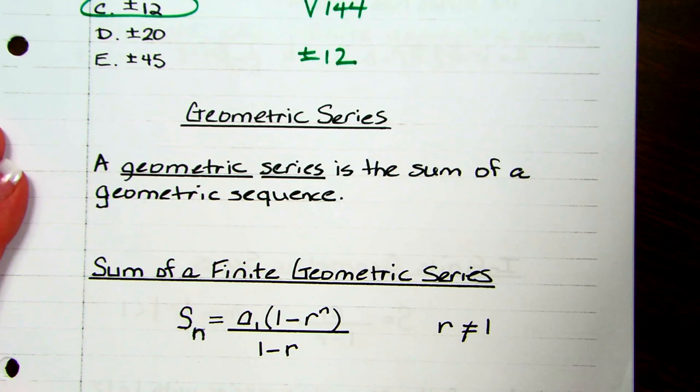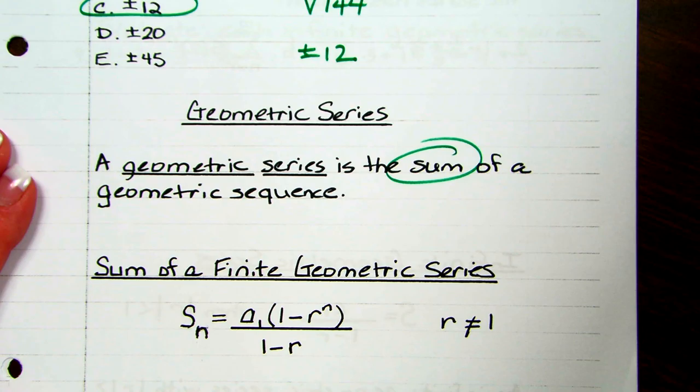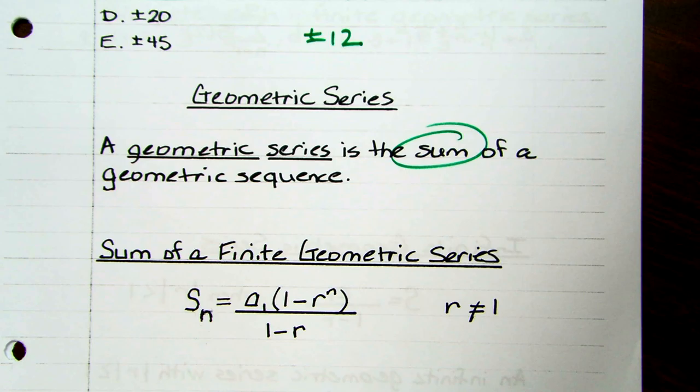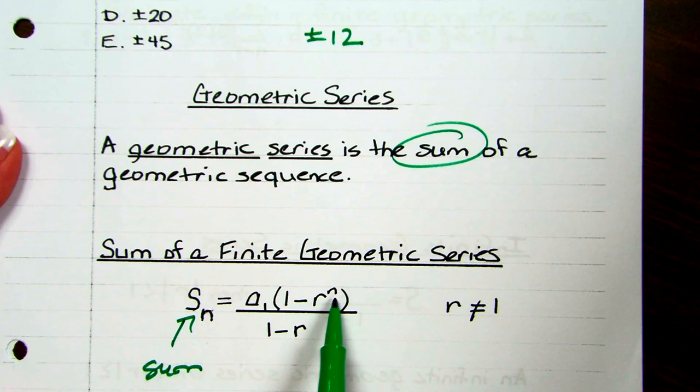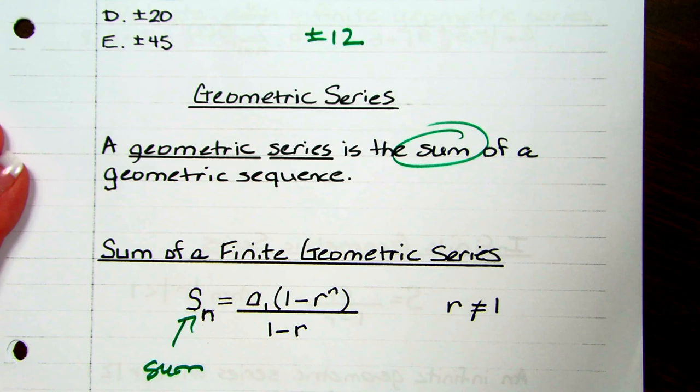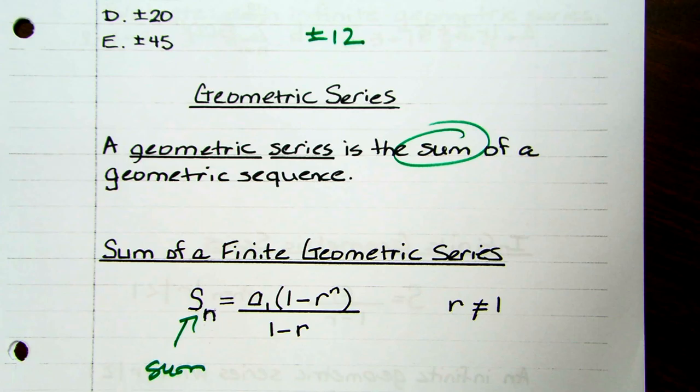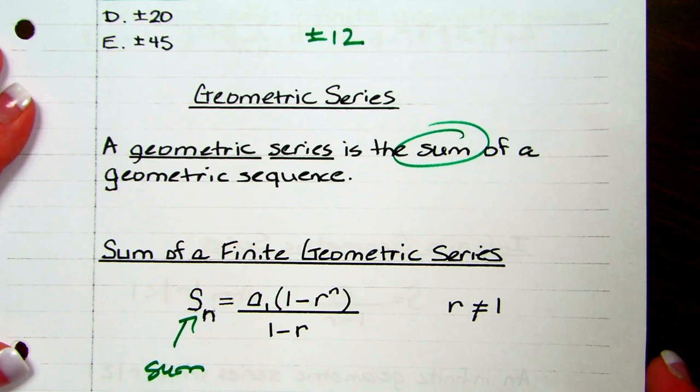The last thing we're going to talk about is the geometric series — remember, series is just the sum. You have two types: finite and infinite. Finite is the one that has a first and a last term, and infinite is the one that goes on and on. The S means sum. The formula is: S sub n equals the first term times (1 minus R to the n power) divided by (1 minus R). R cannot equal 1 because you'd have 0 on the bottom, which would be undefined.